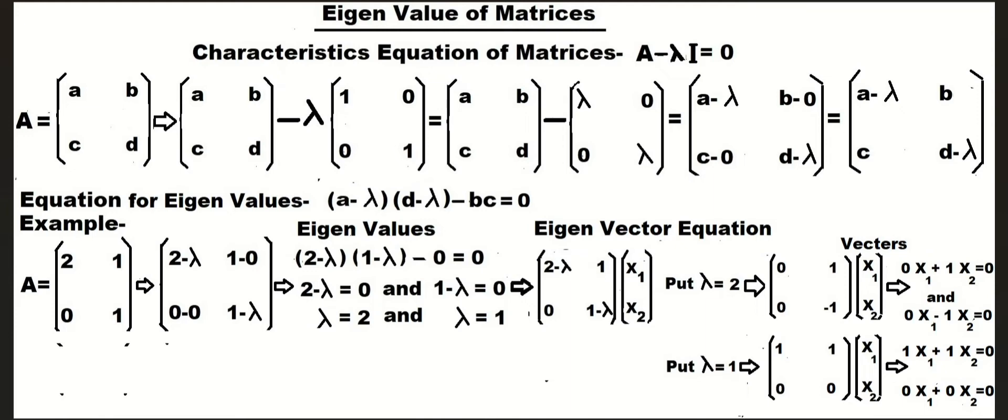You have one formula for this. For matrix A with elements a, b, c, d, after putting the values in the equation, you will find the equation for eigenvalues: (a minus lambda) multiplied by (d minus lambda) minus bc equal to 0.